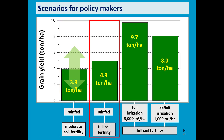If more fertilizers are applied, the yield will increase by 1 ton, and we get an average yield of close to 5 tons per hectare. In a wet year you can get even more than 8 tons per hectare, but in a dry year the yield might be lower than on the less fertilized fields.